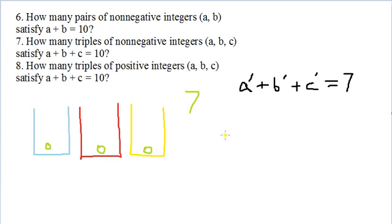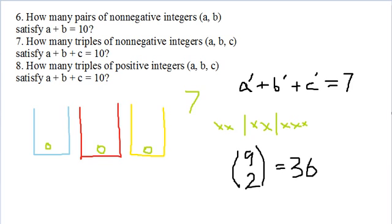But what it boils down to is it's the balls and urns problem again. So if you think about it, we want to have, if you convert it to stars and bars, you want to have two bars, and you want to have seven stars somewhere in here. And so the formula for that is, since there are nine total objects and we're choosing two to be bars, nine choose two, which is 36.